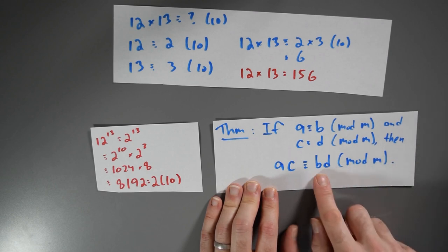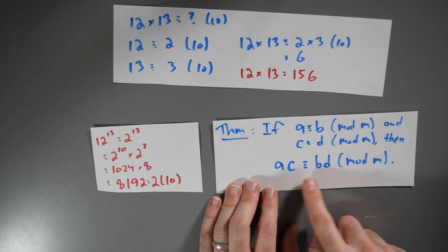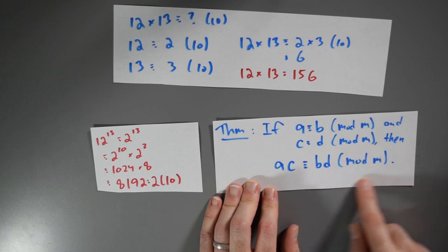But what I've done is replaced equivalent things. a is being replaced by b. c is being replaced by d. And I'm getting an equivalent answer. a times c is the same as b times d working modulo m.